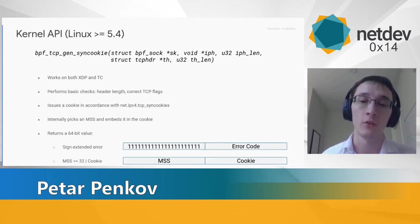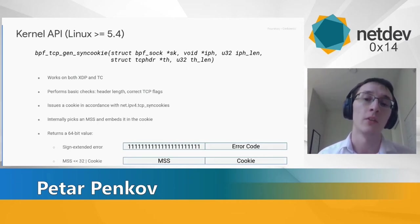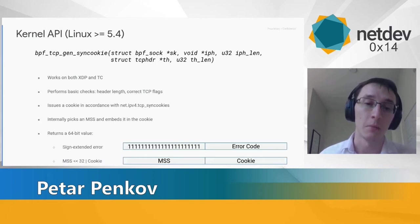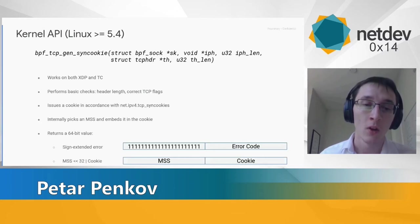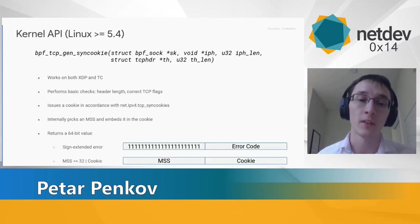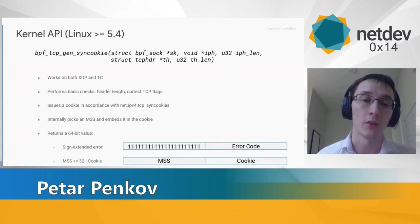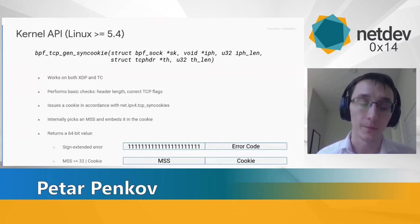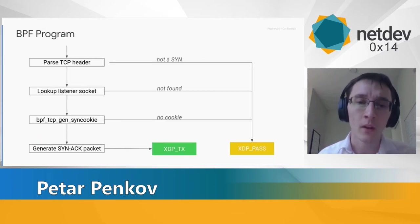The helper picks the MSS similarly to how the kernel does it, maps it to 3-bit space, and encodes it into the SYN cookie. The return value is a concatenation of the 16-bit MSS and the 32-bit cookie. On success, the top 16 bits of the return value are all zero. On failure, we get a sign-extended error code, allowing us to verify failure by comparing to zero.